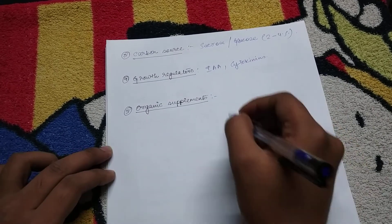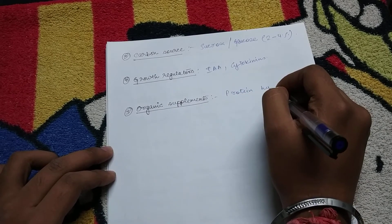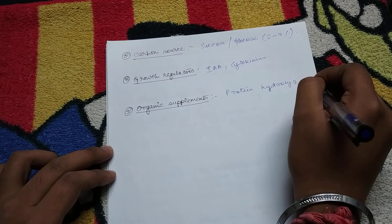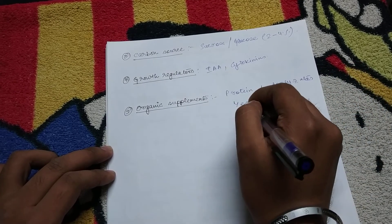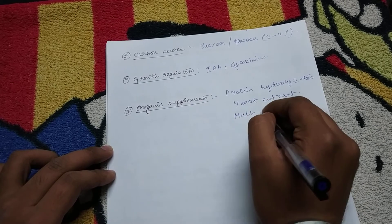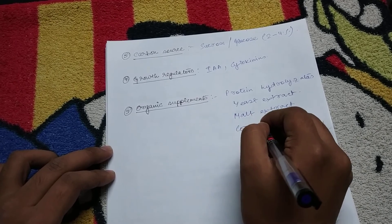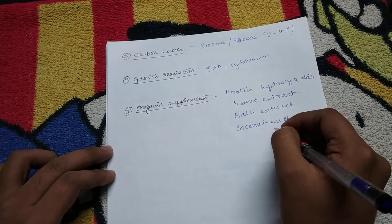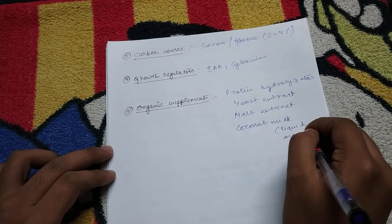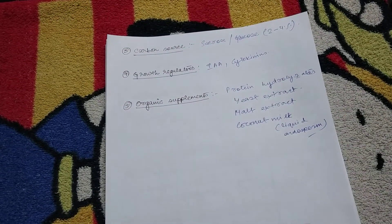Now organic supplements. The organic supplements contain protein hydrolysates, yeast extract, malt extract, and coconut milk. The liquid endosperm of coconut milk is required.